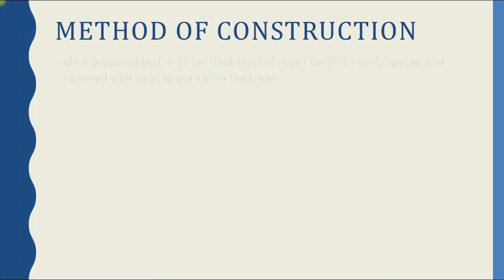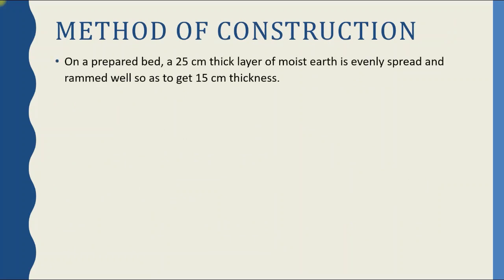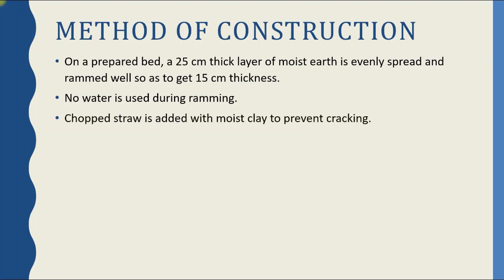The method of construction of mud flooring is as follows. On a prepared bed — the leveled earth on which we lay the ground floor — a 25 cm thick layer of moist earth is evenly laid and rammed well so as to get 15 cm thickness. No water is used during this ramming process, and we can add chopped straw to prevent future cracking of this kind of flooring.